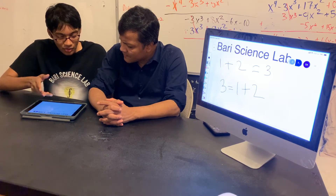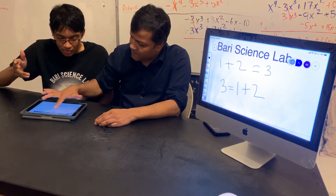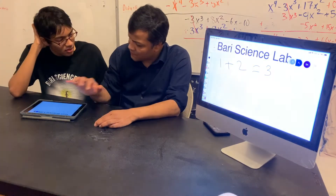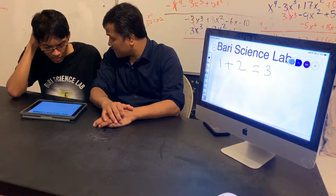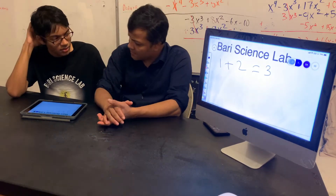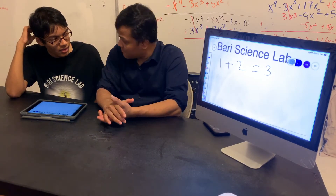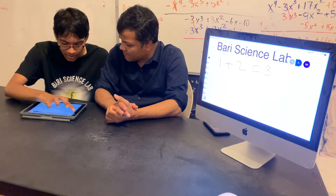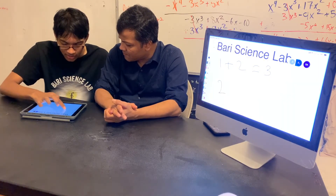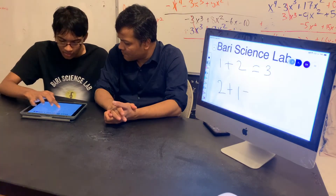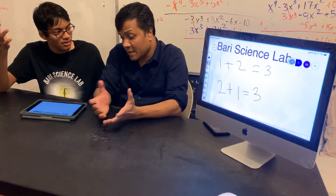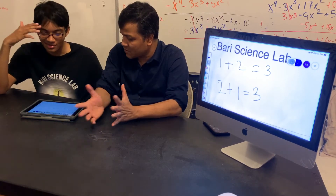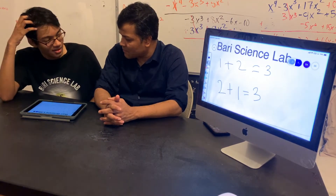Try again. So this is the first term, this is the second term. First term plus second term is three. Can you write the second term before the first term and see whether that gives us the same answer? Do you mean like two plus one? Yes — that's also going to be three. Absolutely. So that is what the commutative property is. When you switch the terms, it still gives you the same answer.